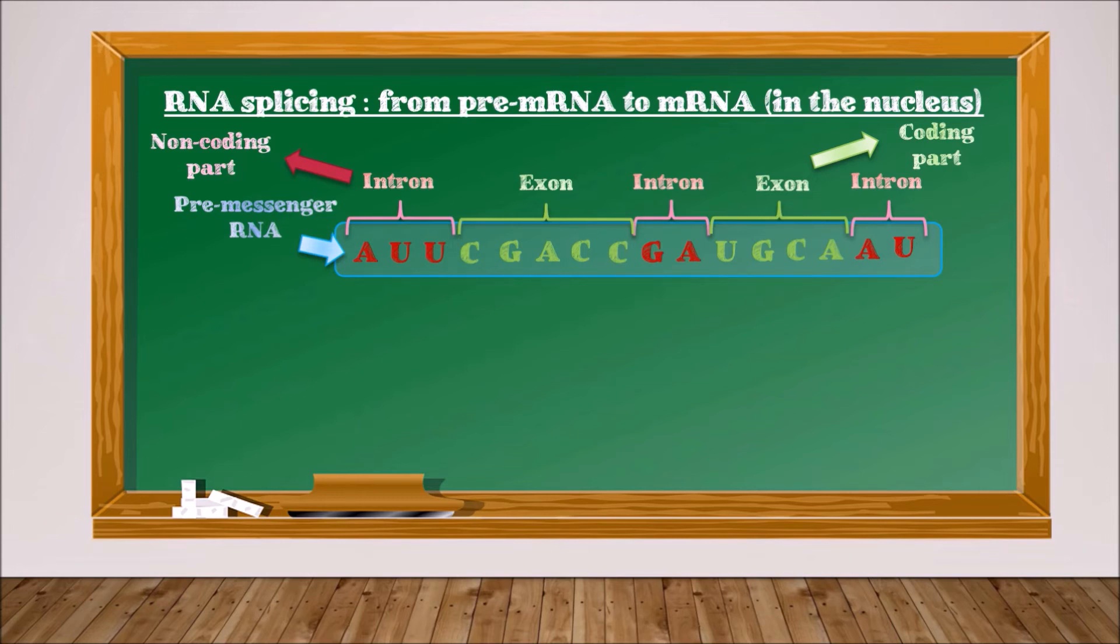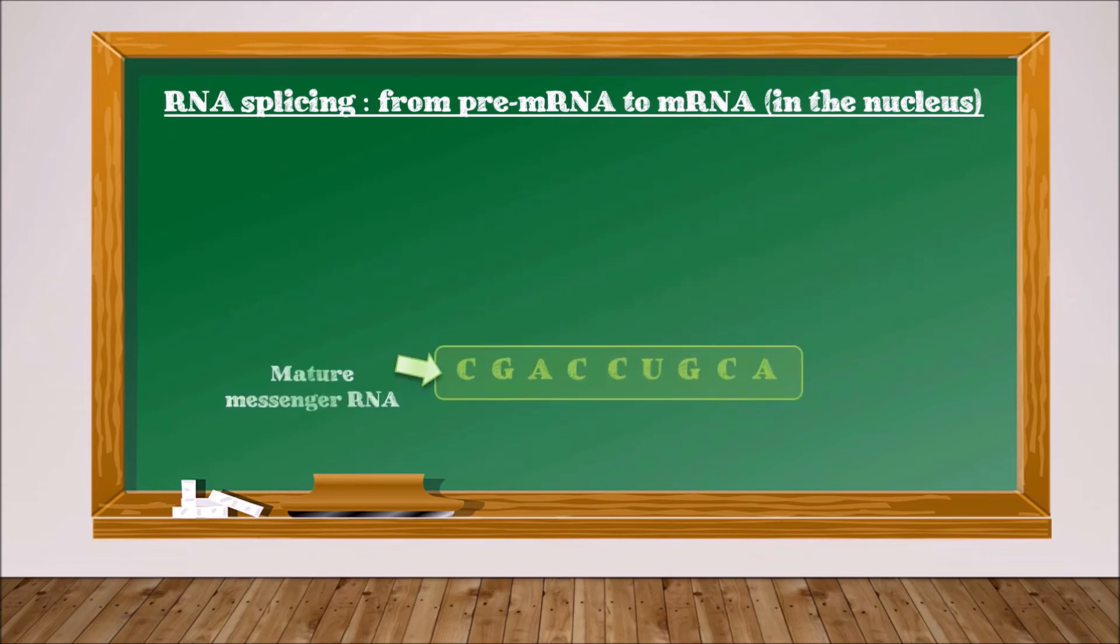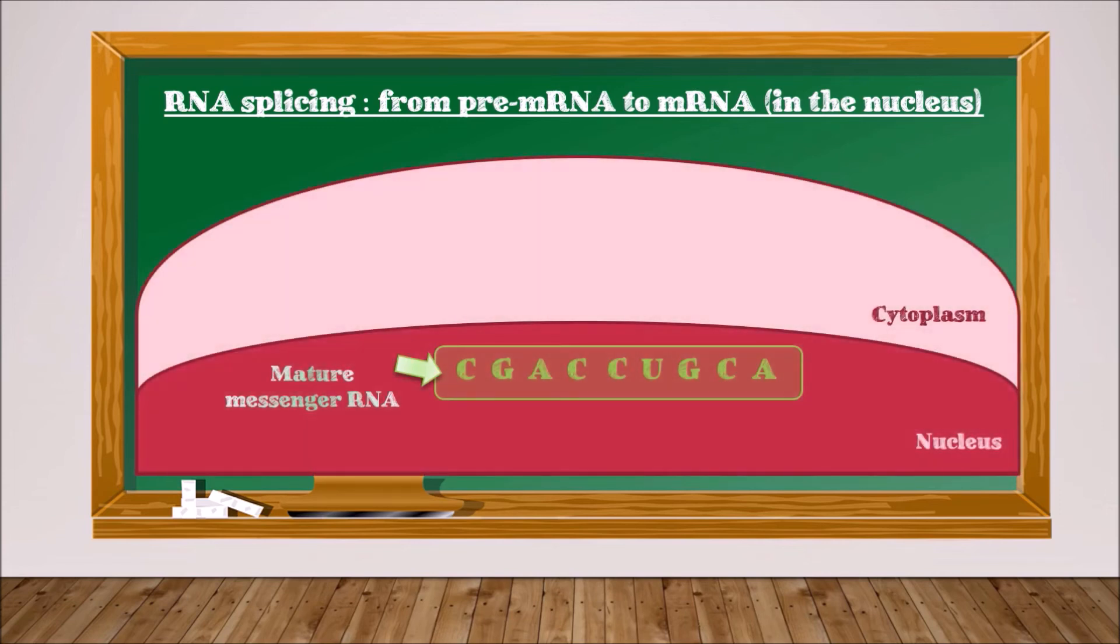Thus, the introns will be removed and only the exons will be kept. At the end, we get a mature messenger RNA that will be able to come out of the nucleus to synthesize proteins.